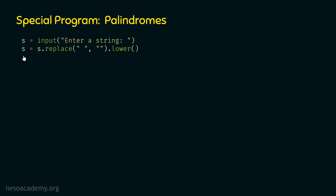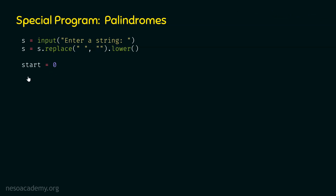Now we are ready to write the logic of this program. The logic is simple: we need to compare the first letter with the last letter first. If they are same, we continue; otherwise, we set some variable to false to indicate the string is not a palindrome. For this purpose, we need two variables. Let's create the variable start and assign zero to it. Let's create one more variable end and assign len(s) minus one to it. If the string is 'madam,' then len gives five, and five minus one is four, so end receives value four. These two variables keep track of the letters we are comparing.